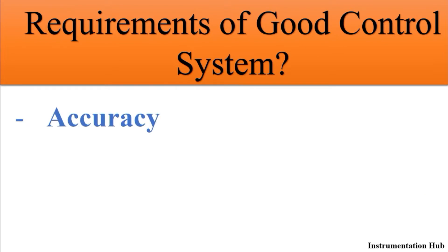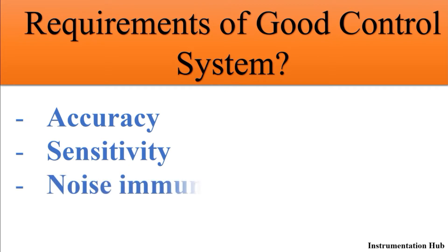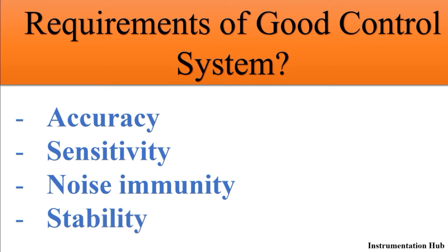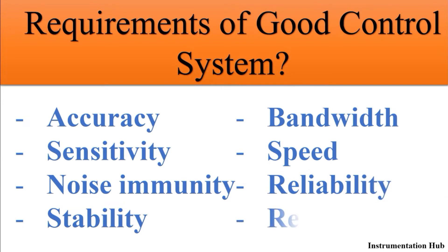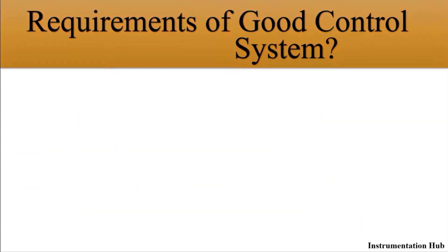The eight requirements of a good control system are: first, accuracy; second, sensitivity; third, noise immunity; fourth, stability; fifth, bandwidth; sixth, speed; seventh, reliability; and the eighth is repeatability. You might have heard these terms and I will explain them one by one.